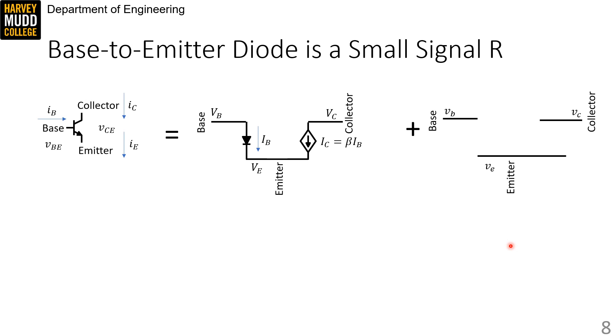Here, I'm showing that our BJT symbol can be replaced with a large signal circuit, shown here, which we've derived before, plus a small signal circuit that's currently blank. I'm using large signal notation in the large signal circuit and small signal notation in the small signal circuit.